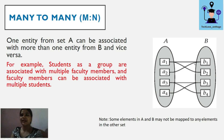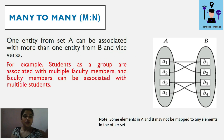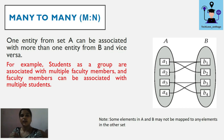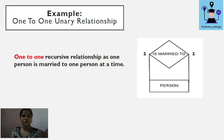Many-to-many means one or many entities from set A can be connected to one or many entities from set B. For example, students as a group are associated with multiple faculty members, and faculty members can be associated with multiple students.